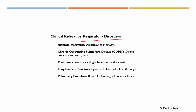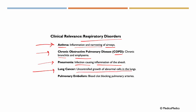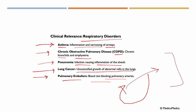Now let's talk about some respiratory disorders. We have asthma — inflammation and narrowing of our airways. We have chronic obstructive pulmonary disease, or COPD, like chronic bronchitis or emphysema. We have pneumonia — an infection causing inflammation of the alveoli. We can have lung cancer — uncontrolled growth of abnormal cells in the lungs. We can have a pulmonary embolism, where a blood clot from our circulation could end up in the lung, blocking a pulmonary artery.